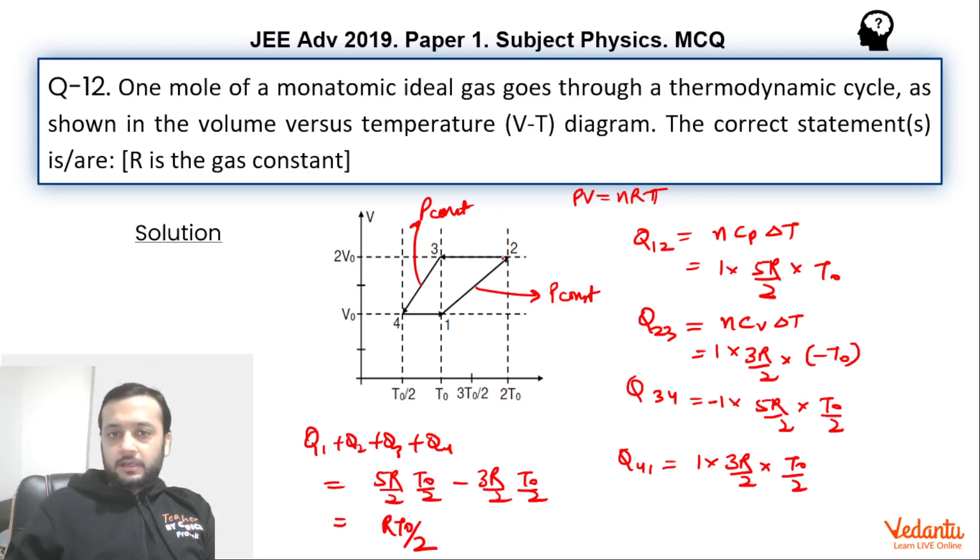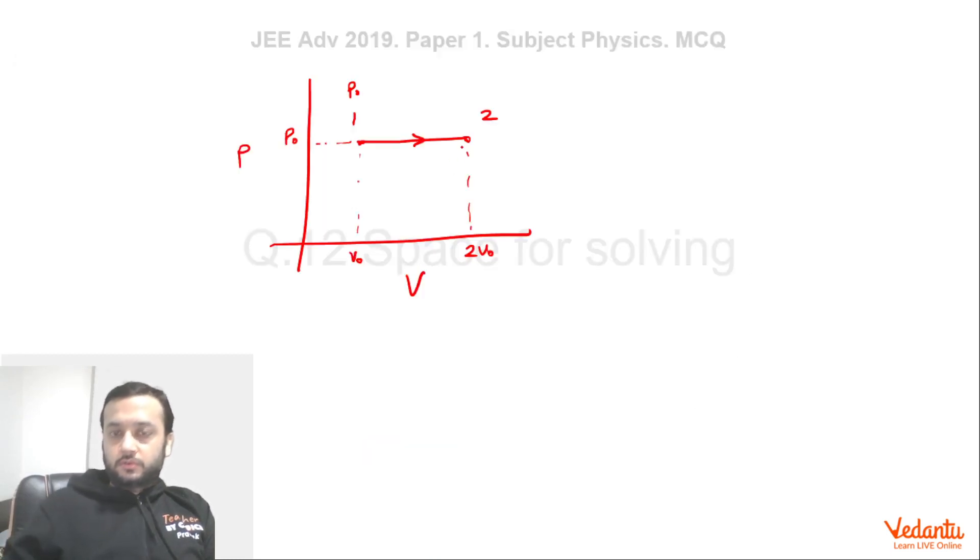From 2 to 3, it's an isochoric process and the temperature has been halved. So if you halve the temperature isochorically, then pressure will also be halved. So that means we will come down and pressure will become P0 by 2. That means at this point pressure would have become P0 by 2. So this is our point 3.